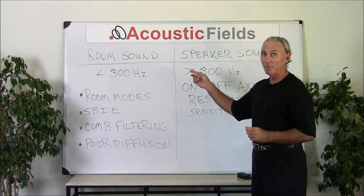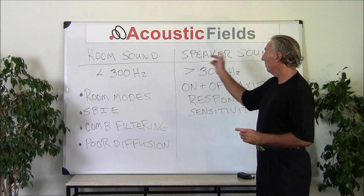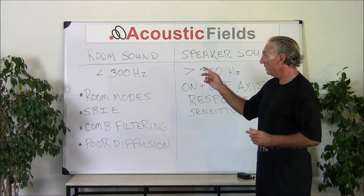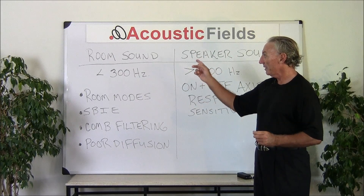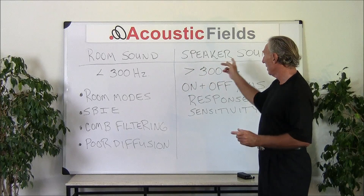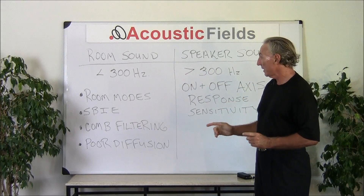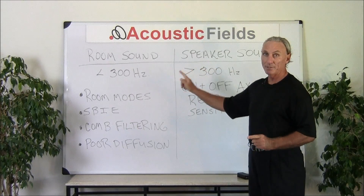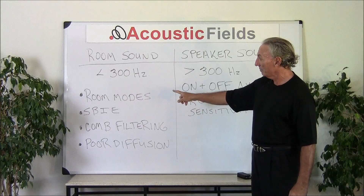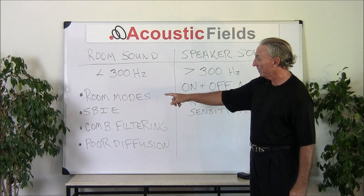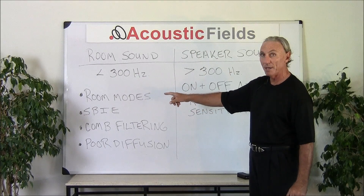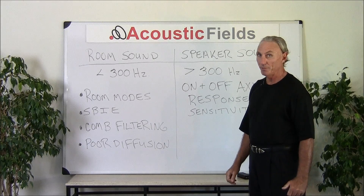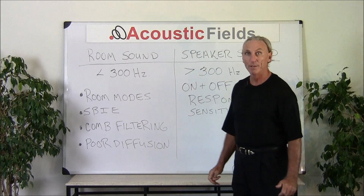So two general areas to think about: room sound and speaker sound. Less than 300 cycles is room sound; greater than 300 cycles is speaker sound. Room sound has four big acoustical distortions: room modes, the speaker boundary interference effect, comb filtering, and poor diffusion. Thank you.